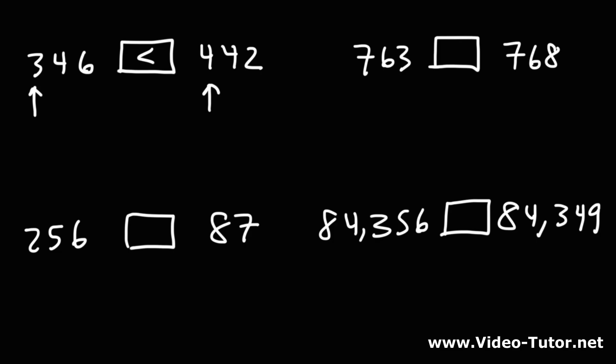Now, what about 763 versus 768? Which one is greater? Well, the sevens are equal. Moving to the next digit on the inside, the sixes are the same. And then looking at the last digit, eight is greater than three. So 768 is going to be greater than 763.